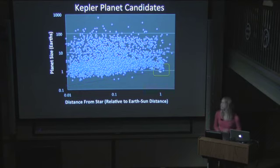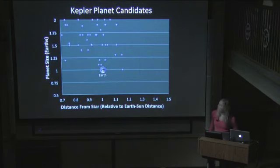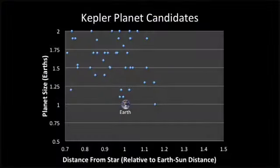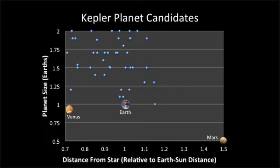If we zoom in on the area around the Earth, we can see that we actually have a couple of planets that receive about the same amount of light from their star and are about the same size as the Earth. For comparison, this is where Venus and Mars fall on that plot. These objects, at least in terms of their distance from the star, look a bit more like Venus than like Mars. But this isn't a fair comparison because depending on how bright the star is, you might want to be a little closer or farther away to have a planet at the same temperature.